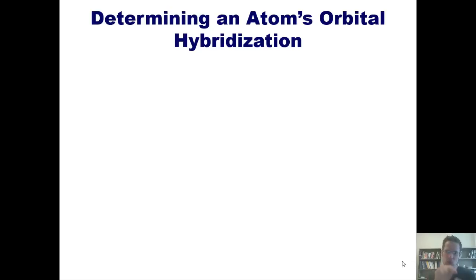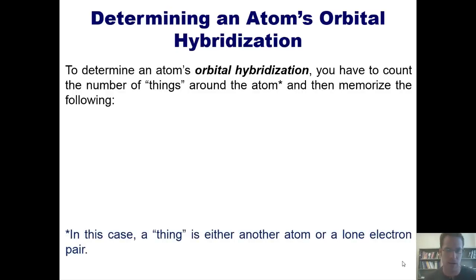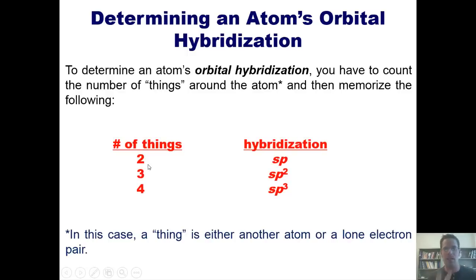For now, I want you to have the ability to look at any atom in a Lewis structure and tell me what that atom's hybridization is. I realize that at first you might not have a clue what that actually means, but don't worry. In my next video, I'll explain to you what is actually going on. So in effect, I'm sort of teaching you how to do the thing, and then afterwards I'm going to teach you what the thing means. So to determine an atom's orbital hybridization, you have to count the number of things around the atom. And when I say things, by the way, I'm talking about either another atom or a lone electron pair. Once you count the number of things around the atom, you then memorize the following: if the atom has two things around it, then it is sp. If it has three things around it, then it is sp2. If it has four things around it, then it's sp3.